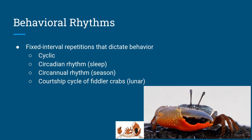Behavioral rhythms are fixed-interval repetitions that control behavior. These can be beyond the circadian rhythm — for example, circennial rhythm, which operates by seasons. An example is the fiddler crab: it uses the lunar cycle and migrates based on wave depth, which is linked to the moon.